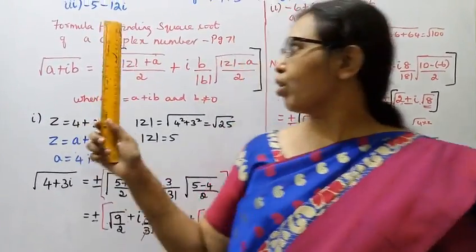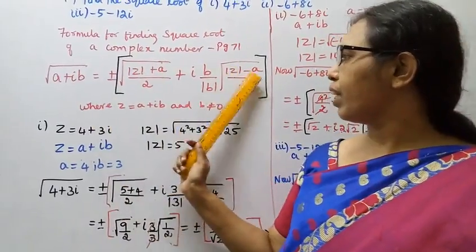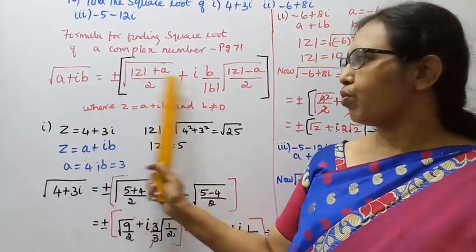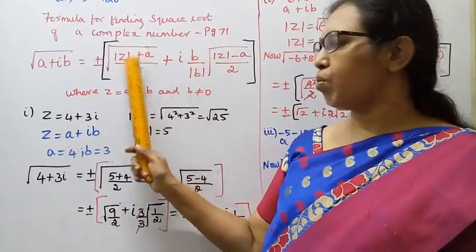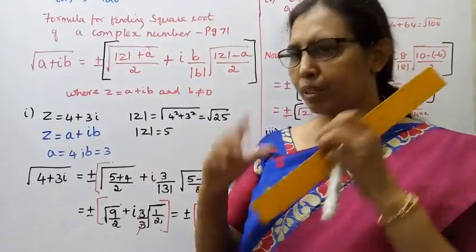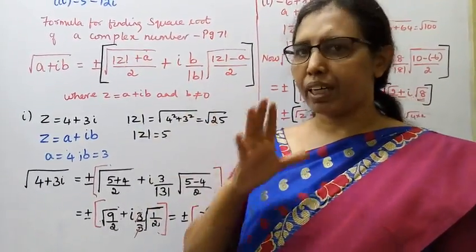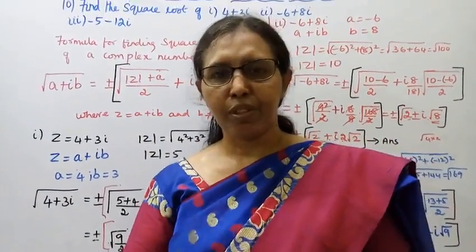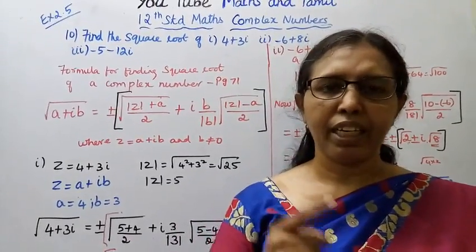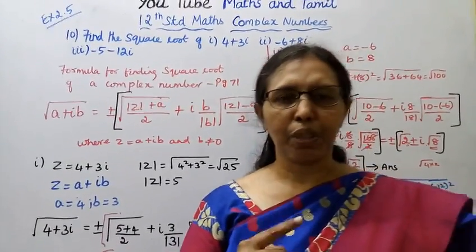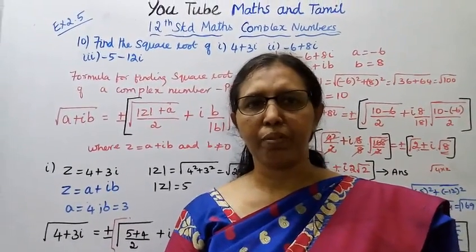So that is how we find the square root of complex numbers using the formula. Find a, b, and mod z, then substitute into the formula for easy answers. This channel helps you get 100 marks. Please subscribe to this channel, click the bell icon, and thank you.